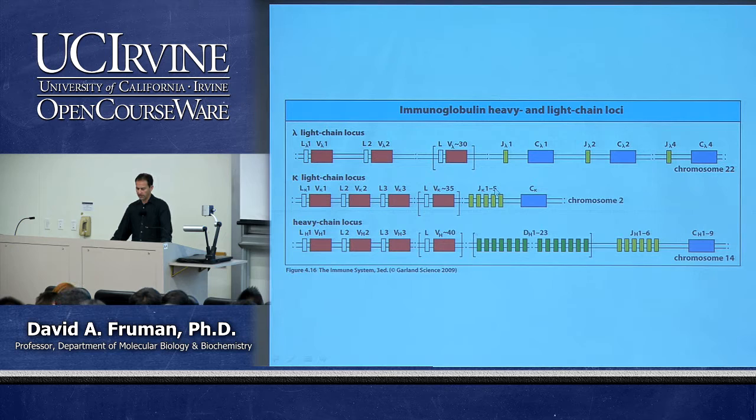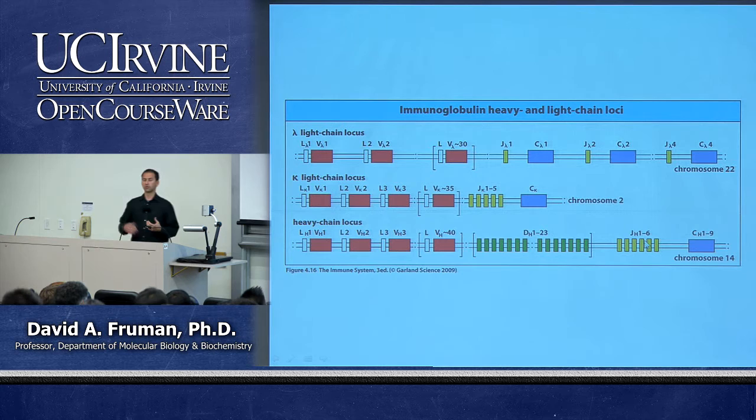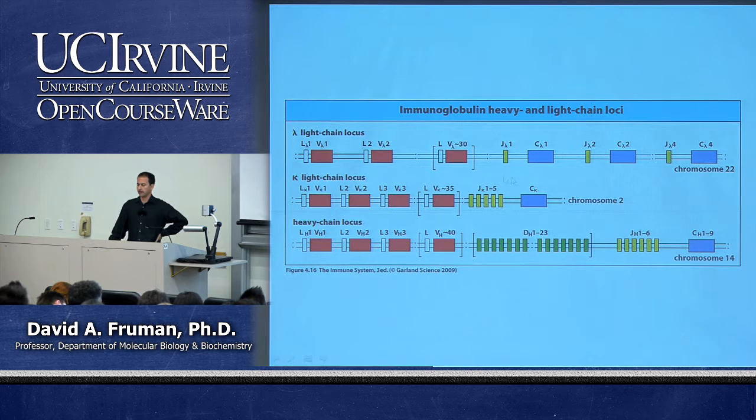For any protein secreted or expressed on the cell surface, it has to be inserted into the ER membrane using a small hydrophobic leader sequence — that's what the L refers to here. Most of the variable domain is encoded by the V segment, but the last few amino acids are encoded by J segments — about four to six for the different chains. The heavy chain also has D segments, which stands for diversity. V stands for variable, J for joining, and D for diversity.